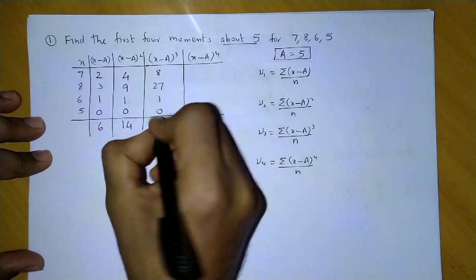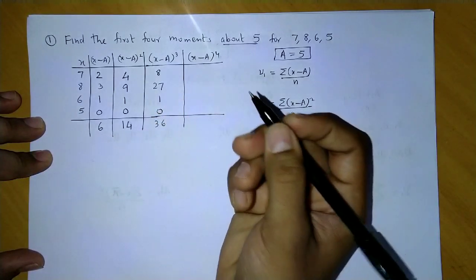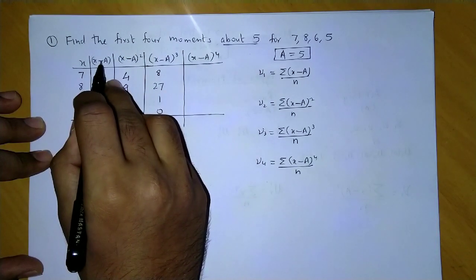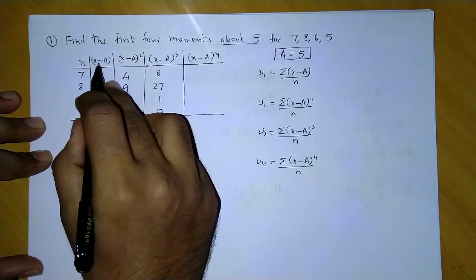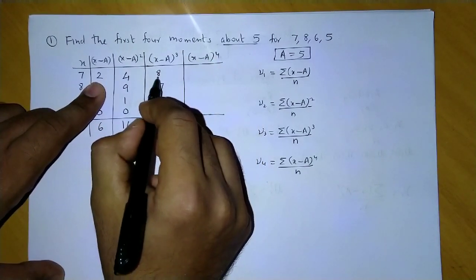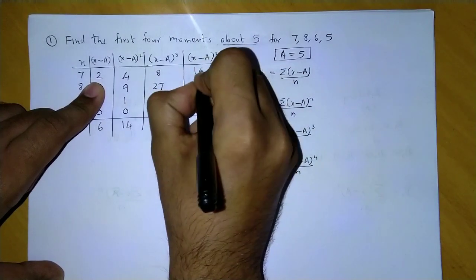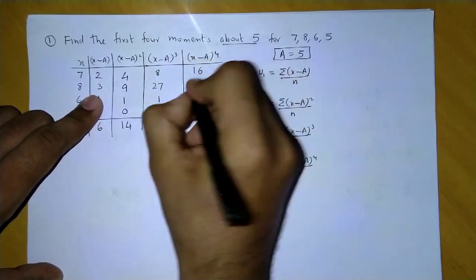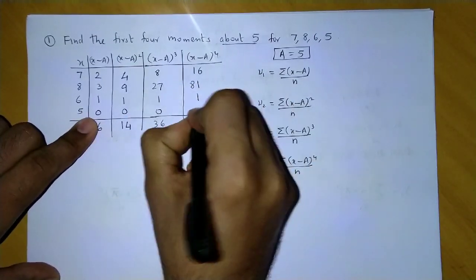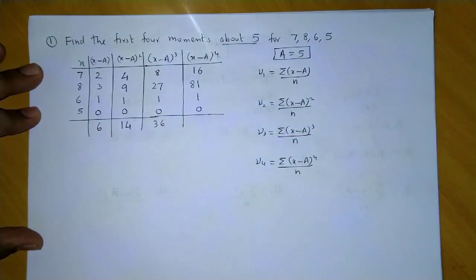Now raised to four: the cube value into (x minus a) will give you (x minus a) raised to four. So let's multiply these two: 8 into 2 gives me 16, 27 into 3 is 81, 1 into 1 is 1, and lastly 0. So let me quickly add this: 16 plus 81 plus 1 gives me 98.